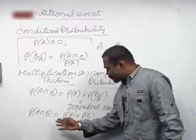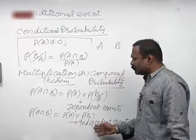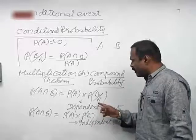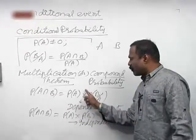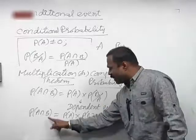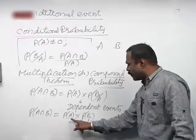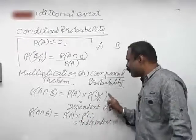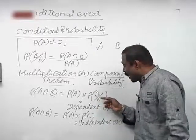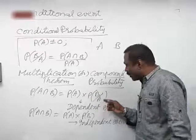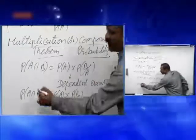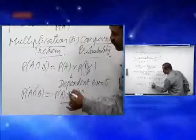So this is the multiplication theorem on probability. For dependent events, P of A intersection B equals P of A into P of B given A. For independent events, P of A intersection B equals P of A into P of B — no need to know about A. The intersection simply becomes multiplication.